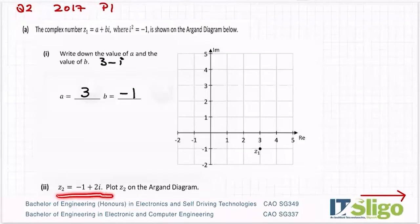z2 is equal to minus one plus two i. Plot z2 on the Argand diagram. So minus one on the real axis, over I come to minus one, and plus two i up I come to plus two i. So minus one plus two i, and always label them. So that's my z2, minus one plus two i. So five marks for this, five marks for this, nice soft ten marks.